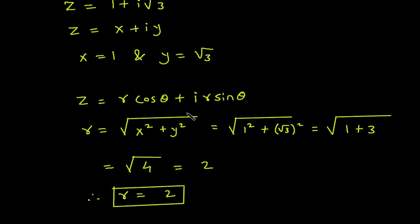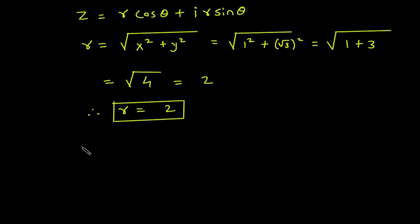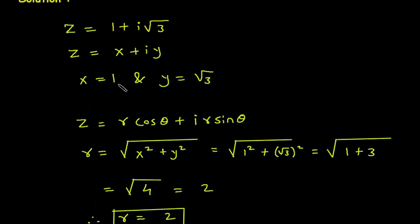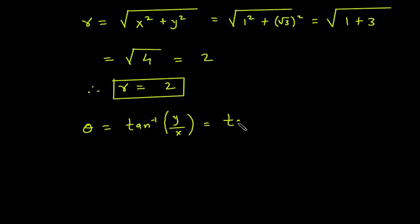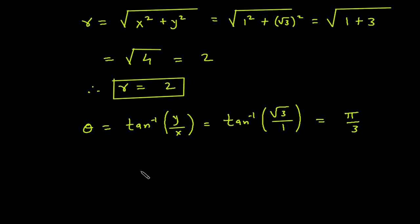Next we have to find the value of theta. Theta is equal to tan inverse of y by x. Now y is root 3 and x is 1, so this will be tan inverse of root 3 by 1. Therefore theta is equal to pi by 3, because tan inverse of root 3 is pi by 3. Now we have the value of theta which is equal to pi by 3.